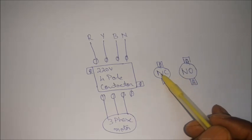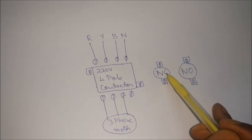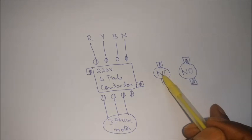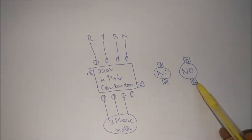But the opposite happens in the NC switch. A link between the top and bottom terminal always exists. But when you press the button, the link is broken.